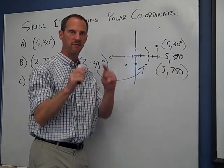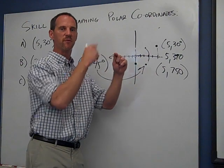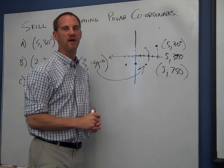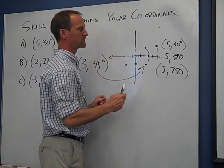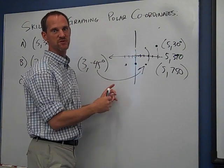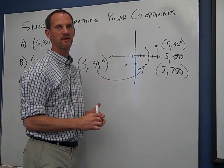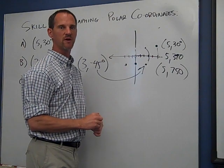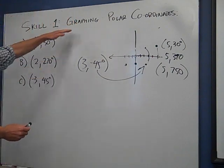So we can find the same position with multiple pairs of coordinates. You can't do that in rectangular format. It's always 3, 4 is the same as 3, 4. There's nothing else that will get you there the exact same way. All right? So you should know how to graph polar coordinates.